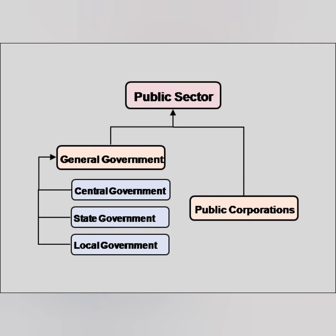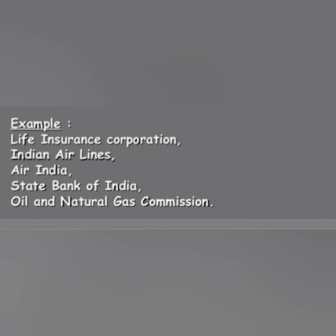Our public sector is divided into two parts. First, general government — which includes central government, state government, and local government. The other part is public corporations. Some examples of public corporations are: Life Insurance Corporation (LIC), Indian Airlines, Air India, State Bank of India, and ONGC — that is, Oil and Natural Gas Commission.